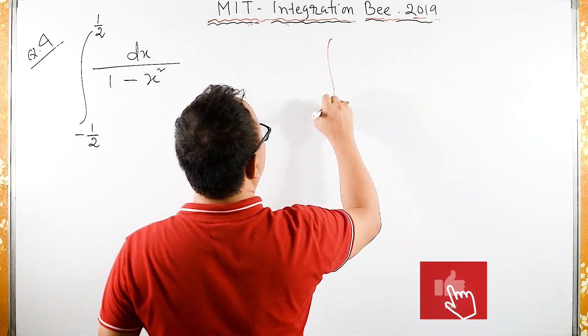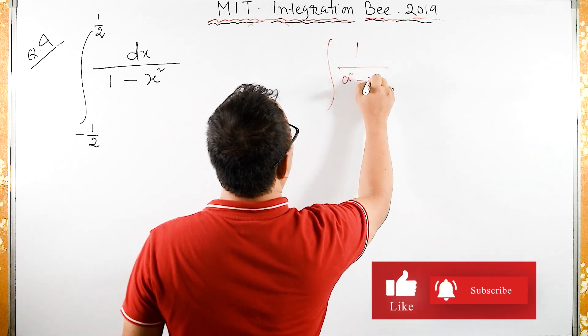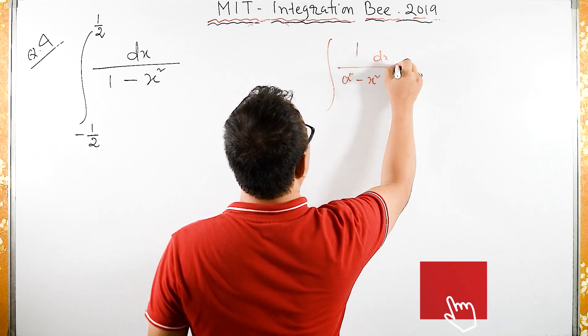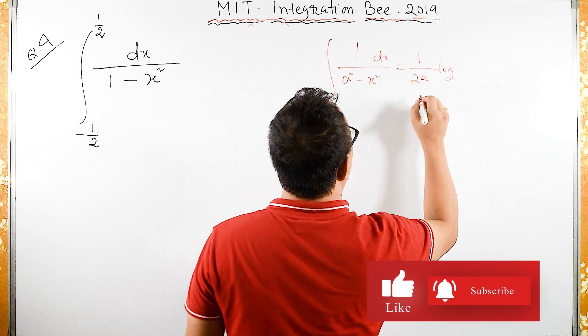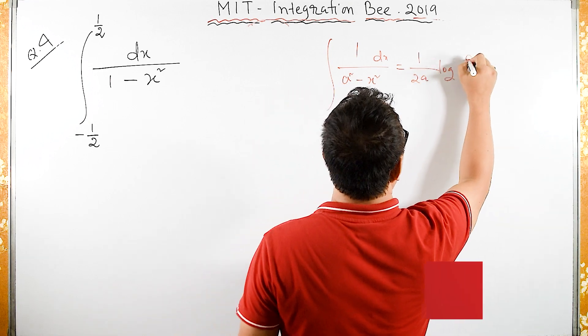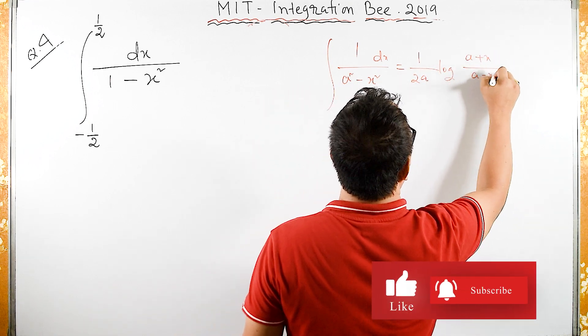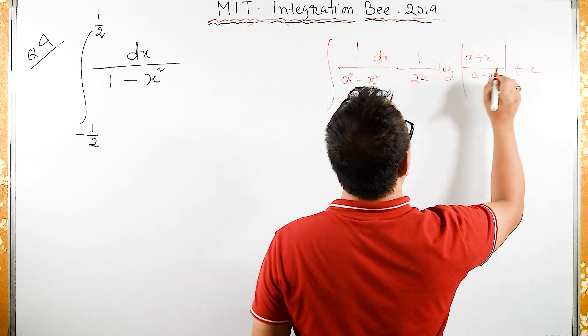Remember we have integral 1 upon a square minus x square dx is same as 1 by 2a log of it is minus then plus a plus x upon a minus x plus some constant c.